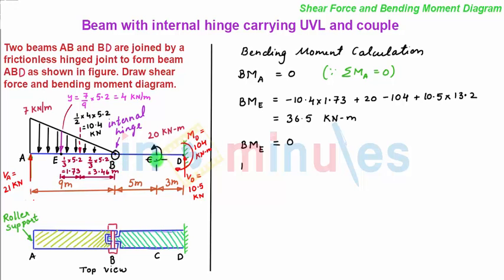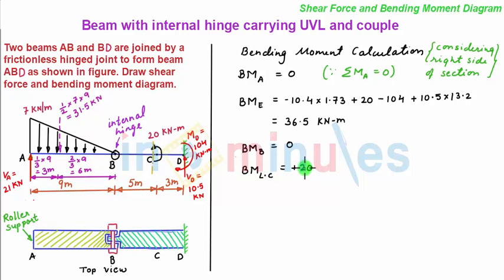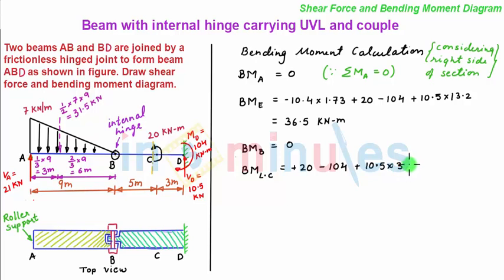Next we move to point C. As we see, there is a moment acting at point C, so we take two sections — one towards the left of C and one towards the right of C. By taking a section towards the left of C, the bending moment is plus 20. Then there is a clockwise moment of 104 kN·m (Md), so we have minus 104. Then we have a clockwise moment due to the vertical support reaction of 10.5 kN acting at a distance of 3 meters from this section, so we have plus 10.5 multiplied by 3. This value comes out to be minus 52.5 kN·m.